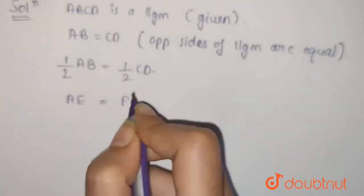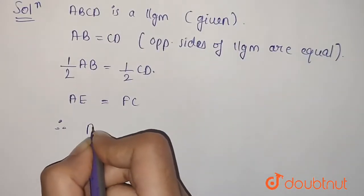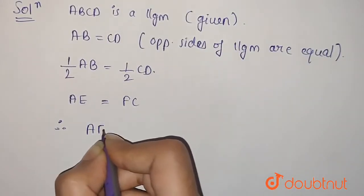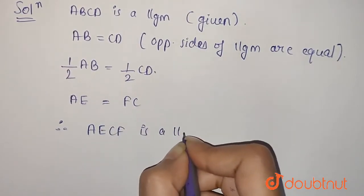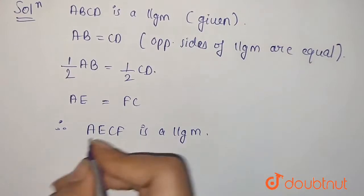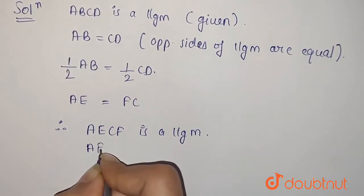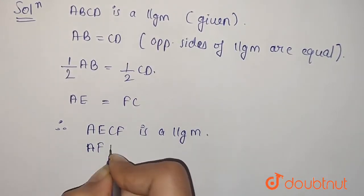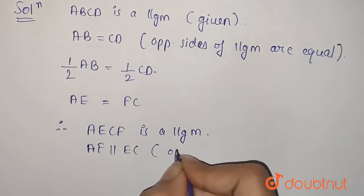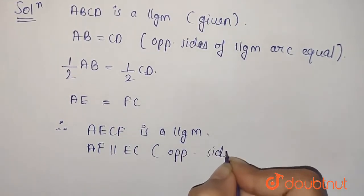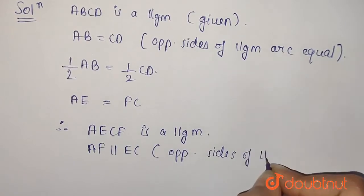So therefore AE = CF. AECF is a parallelogram, so AF is parallel to EC as opposite sides of parallelogram.